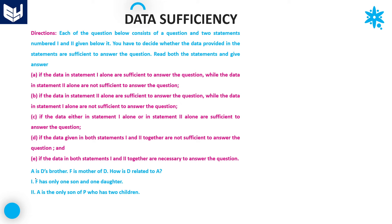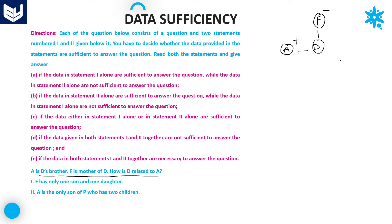Next question. A is D's brother — this information is common. And F is the mother of D, which means F is automatically the mother of A also, because A and D are siblings. The question is: how is D related to A? Using the question alone, D is either a brother or a sister, since we don't know the gender of D. If the question were how is A related to D, the answer would simply be brother.